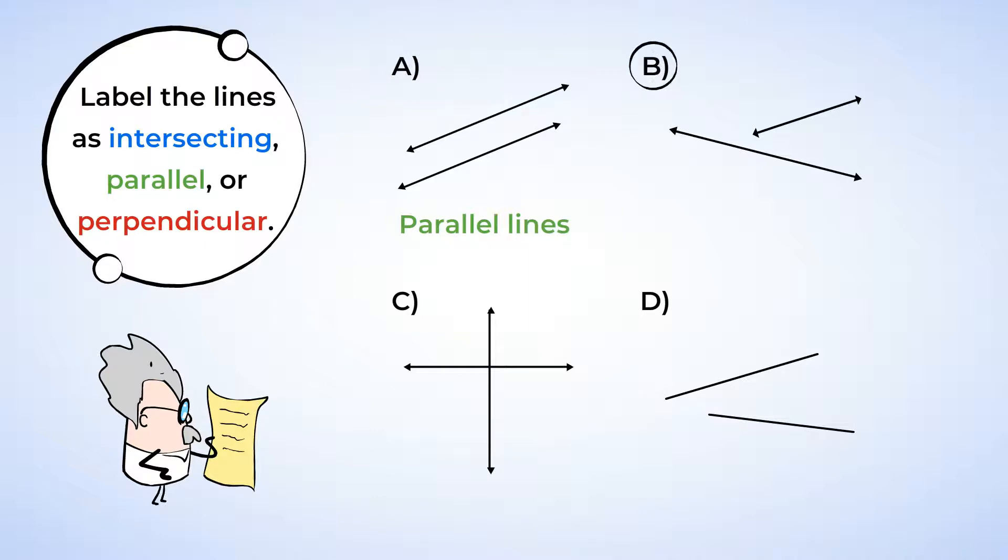Next up is Part B. These two lines aren't touching at all. Lines extend forever, though, so if we were to extend the lines, they would cross. This means that they are intersecting lines. And if we extend them, we can see that the angles aren't 90 degrees, so they're not perpendicular. Great work! Now let's keep on going.